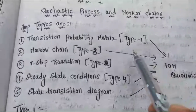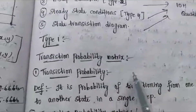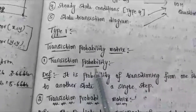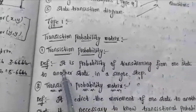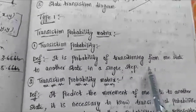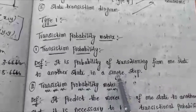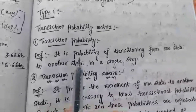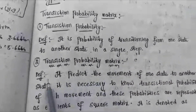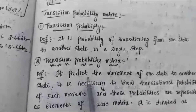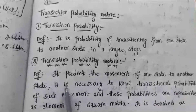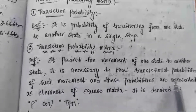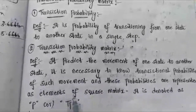The first concept is the Transition Probability Matrix, type 1. To understand it, we first need to know what transition probability is. Transition probability is the probability of transitioning from one state to another state in a single step. The Transition Probability Matrix predicts the movement from one state to another state; the transition probabilities of such movement are represented as elements of a square matrix.